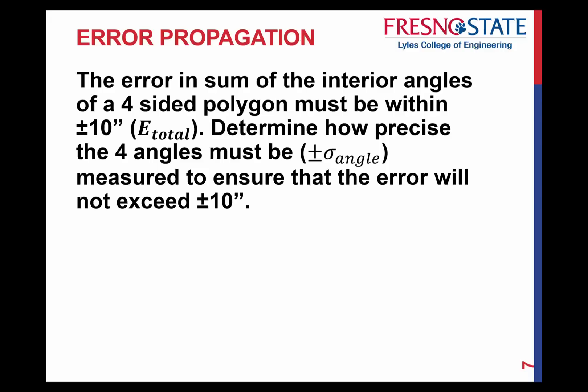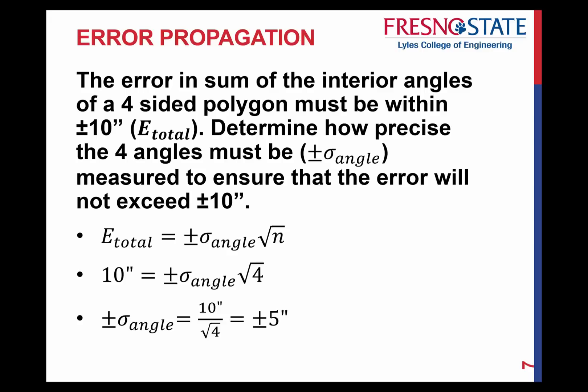Now let's look at it differently. The error of the sum of interior angles of a four-sided polygon must be within 10 seconds. This time I'm giving you the total error of 10 seconds, and we want to determine how precisely we must measure the four angles to ensure the error won't exceed 10 seconds. Now we're solving for the standard deviation. Plugging in the known information, the standard deviation of each angle cannot exceed 5 seconds to ensure the total error will not exceed 10 seconds. It's the same formula — just determining what's given and solving accordingly.